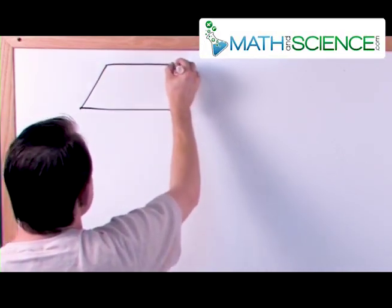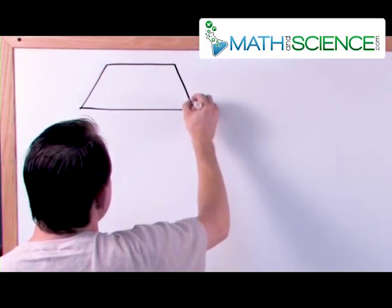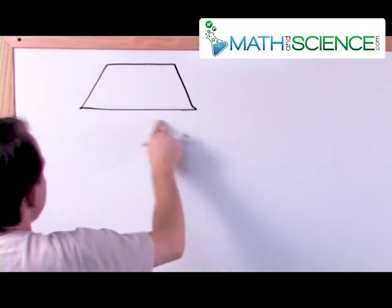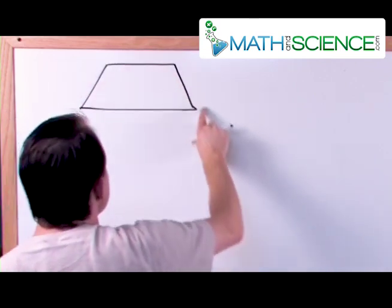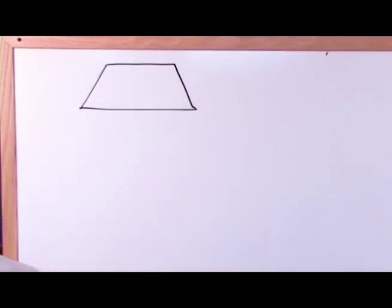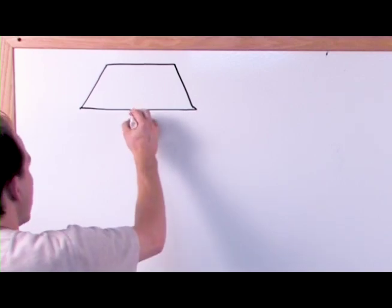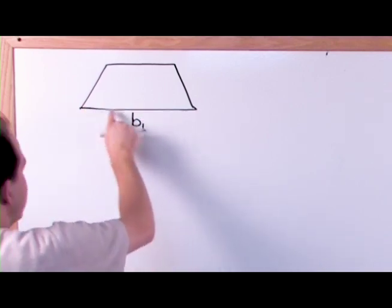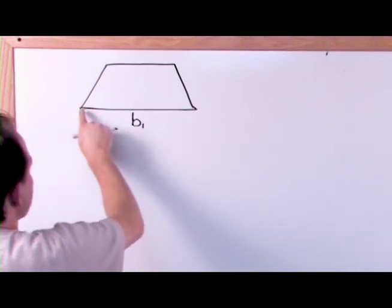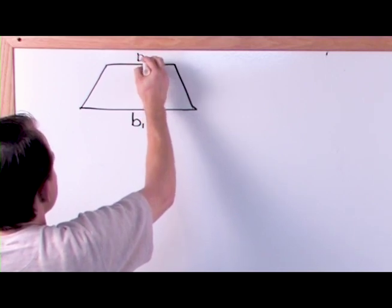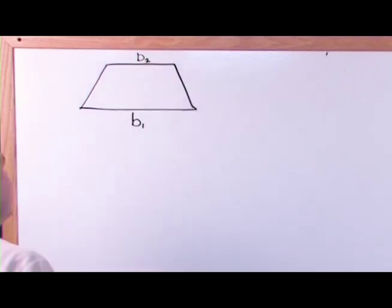A trapezoid looks something like this — the general shape of a trapezoid. You've got two parallel lines and two lines that are not necessarily parallel. Typically, one of these lines at the bottom is called base one and the other one at the top is called base two.